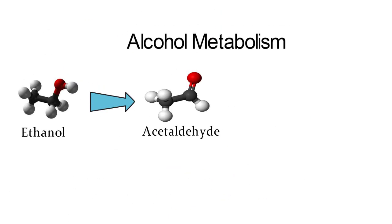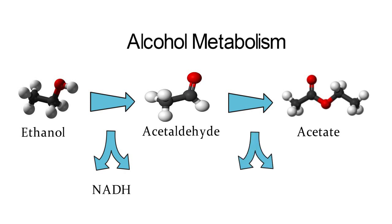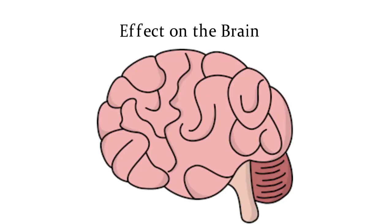The second step for ethanol metabolization is to break the acetaldehyde down into acetate. Both metabolic steps create the byproduct of NADH, which leads to oxidative stress. Oxidative stress is the excessive formation of reactive oxygen species, or ROS, shown by the green molecules, which is known to cause cell death.